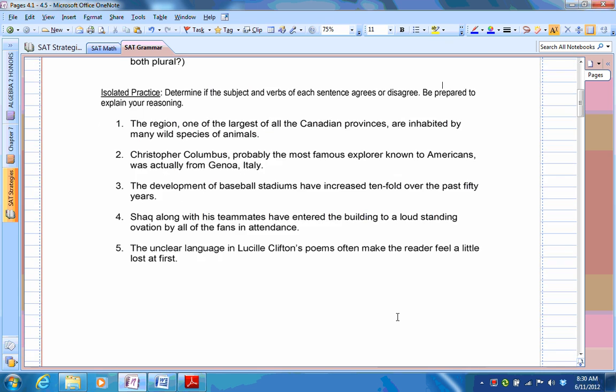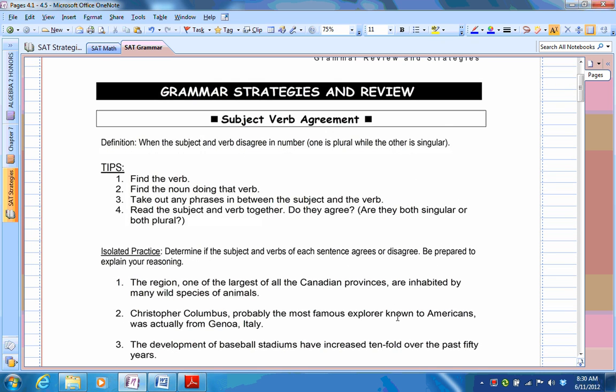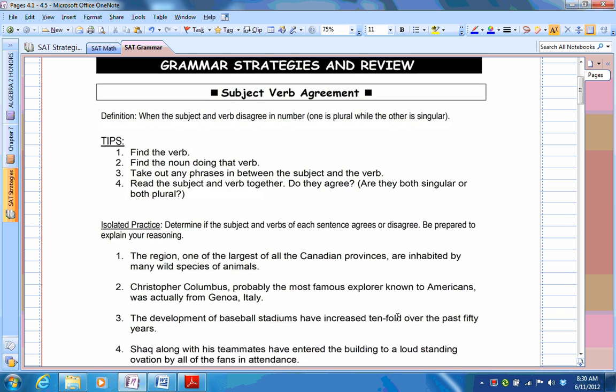So let's talk about subject-verb agreement. That's pretty obvious when you have a disagreement. It's when the subject and verb disagree in number. So the subject might be plural, whereas the verb might be singular or vice versa. So the important thing is to find the verb, find the noun doing that verb, meaning the noun that goes with the verb, take out any phrases in between the subject and the verb, and then read the two together and see if they agree.